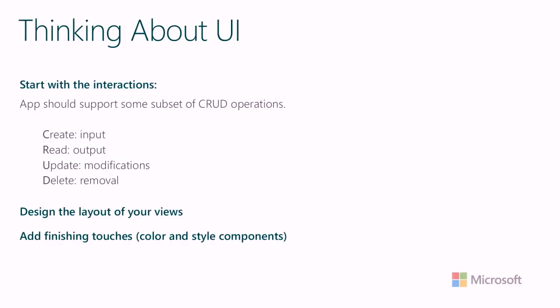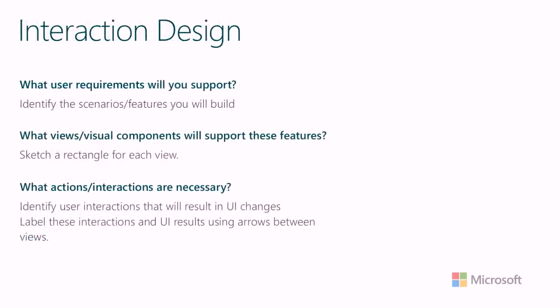The most important things to identify first are the core things that everything else will be built on top of — the core functionality and how users will interact with it. With web apps, users will be performing actions with information: inputting things, viewing data, modifying and deleting things. Think about which of those operations your app will emphasize and how you can support them. From there, you can start designing the layout at a high level to support that functionality, and then add the finishing touches with color, style, and visual details. One way to start is what's called interaction design: identify what requirements your app will support, figure out what visual components and layouts can support those features, and sketch out a high-level visual to depict that interaction.